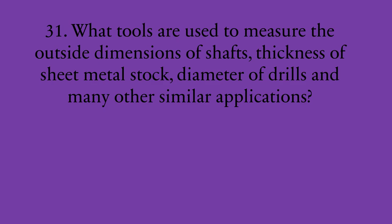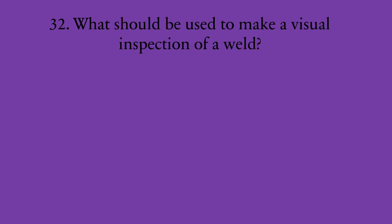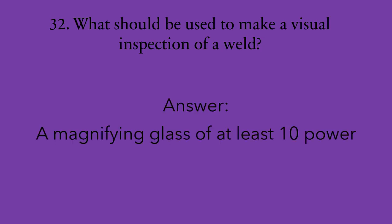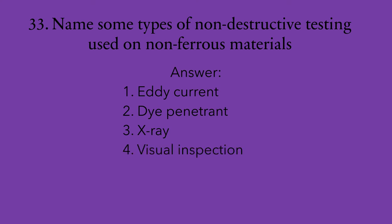Number thirty-one: what tools are used to measure the outside dimensions of shafts, thickness of sheet metal stock, and diameter of drills? An outside micrometer or vernier caliper. Number thirty-two: what should be used to make a visual inspection of a weld? A magnifying glass of at least 10 power. Number thirty-three: name some types of non-destructive testing used on non-ferrous materials. There are actually six: eddy current, dye penetrant, x-ray, visual inspection, coin tap test, and ultrasonic.